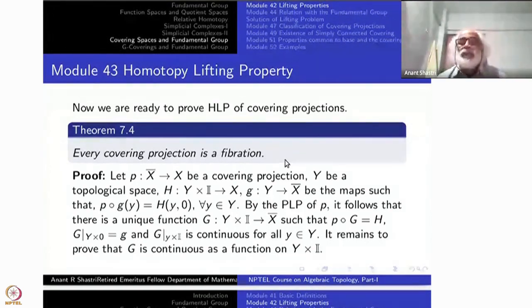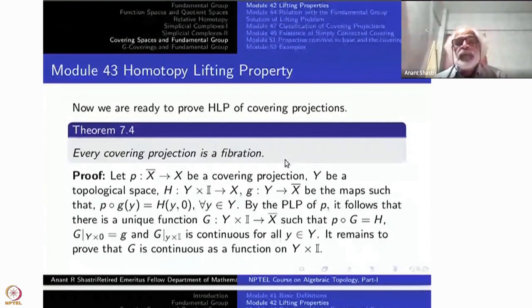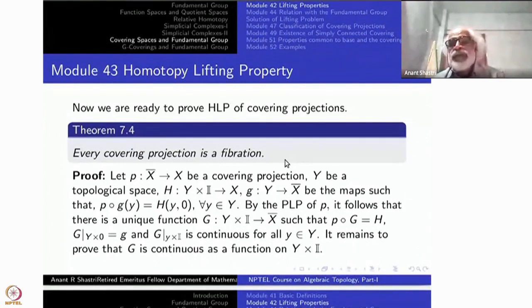Now, start with the covering projection p colon X bar to X. Y is any topological space and H is a homotopy on Y into X. g is a function into X bar such that when you take p composite g and come back to X, it is H of Y cross 0, just the starting map of the homotopy.